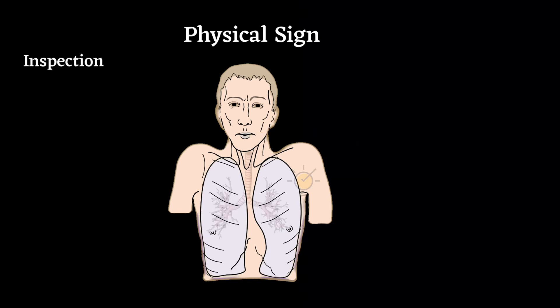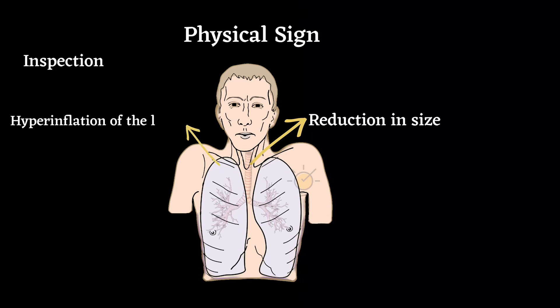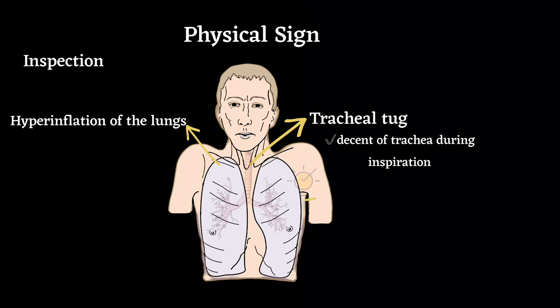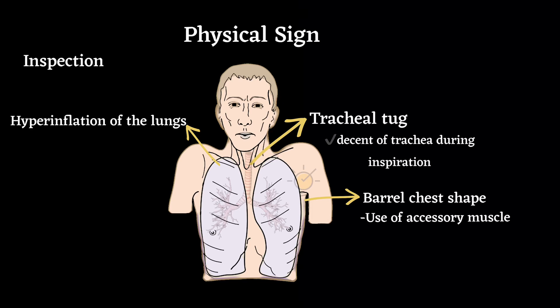On inspection, examination first starts from the trachea, where there may be a reduction in size due to hyperinflation of the lungs. Hyperinflation can also cause tracheal tug, which is descent of the trachea during inspiration. Barrel chest shape — an increase in anterior-posterior diameter in relation to transverse diameter — is seen mostly in emphysema. Use of accessory muscles of respiration and pursed-lip breathing, which is prolongation of expiration to keep positive pressure in the airway to prevent collapse, may also be noted.